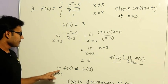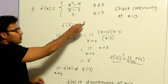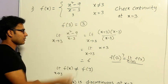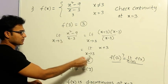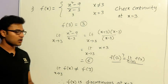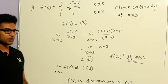Got it? Now, if you observe it, one thing is we got f of A as 3, and the other thing is limit x tends to A of f of x as 6. Now, these two are not equal. Now, what can we say?